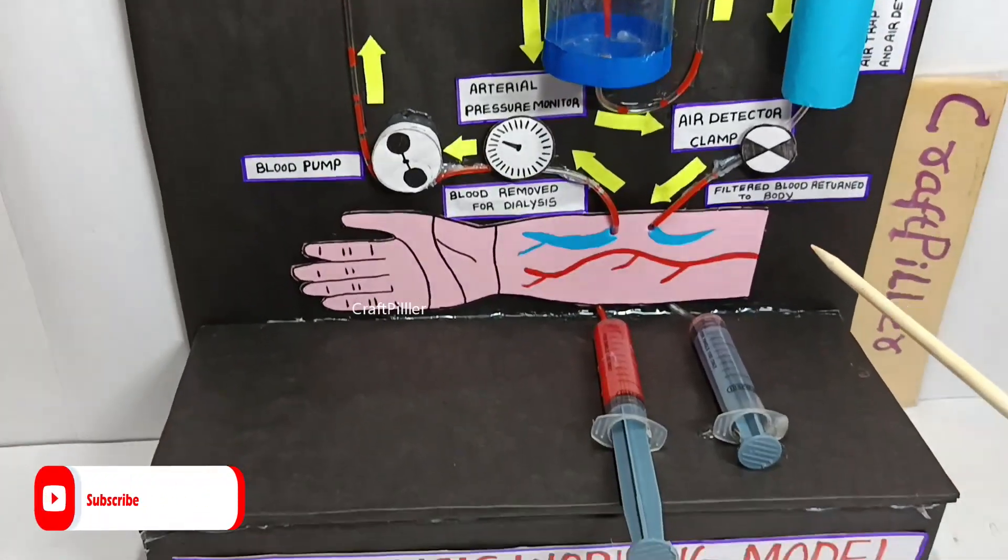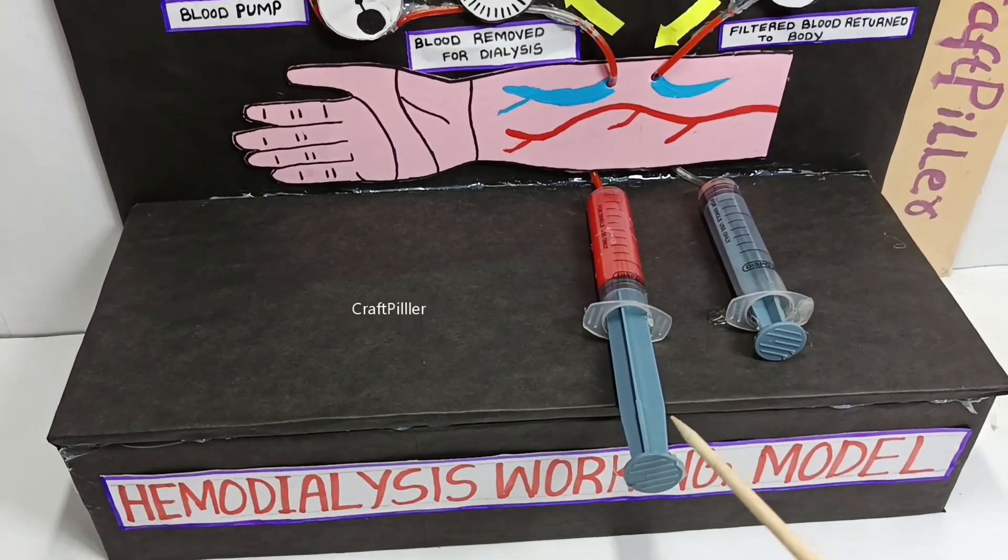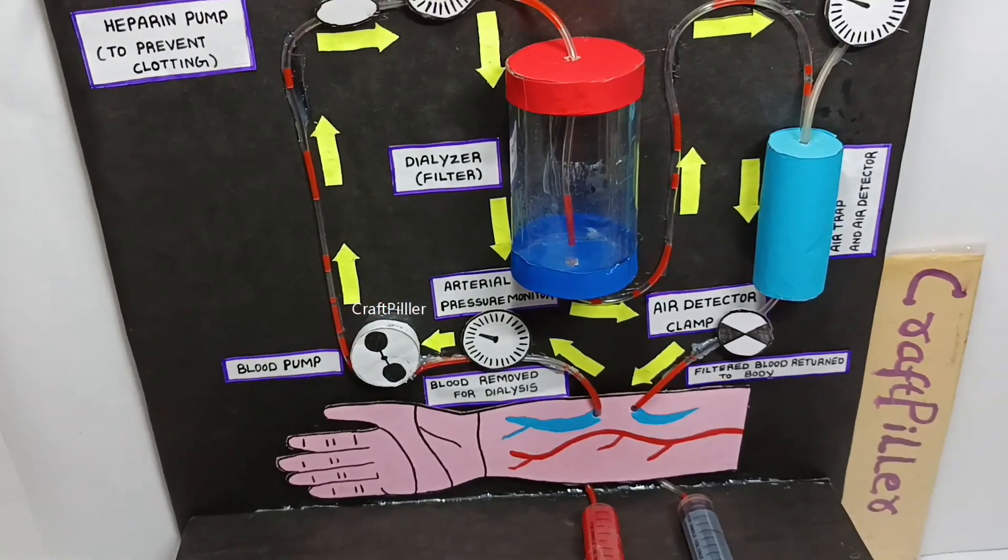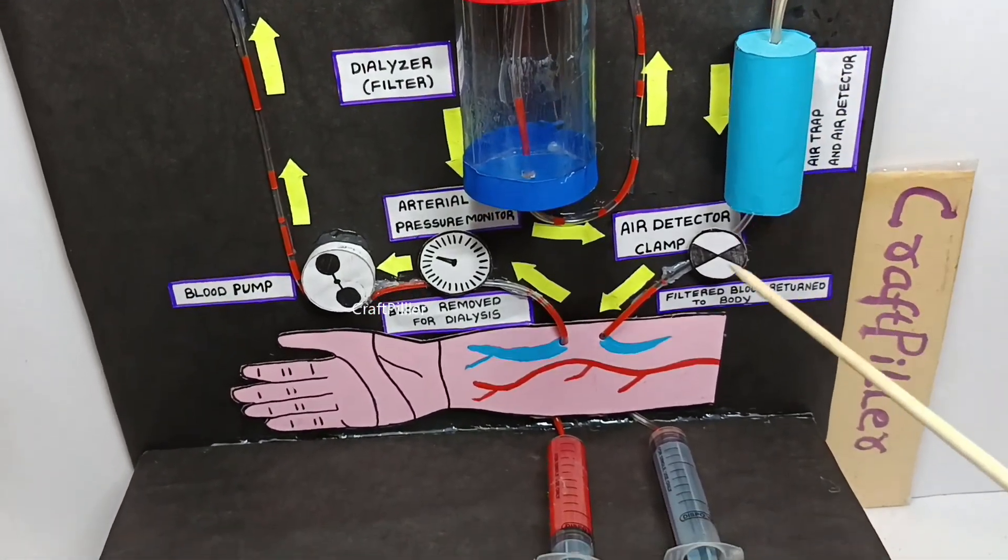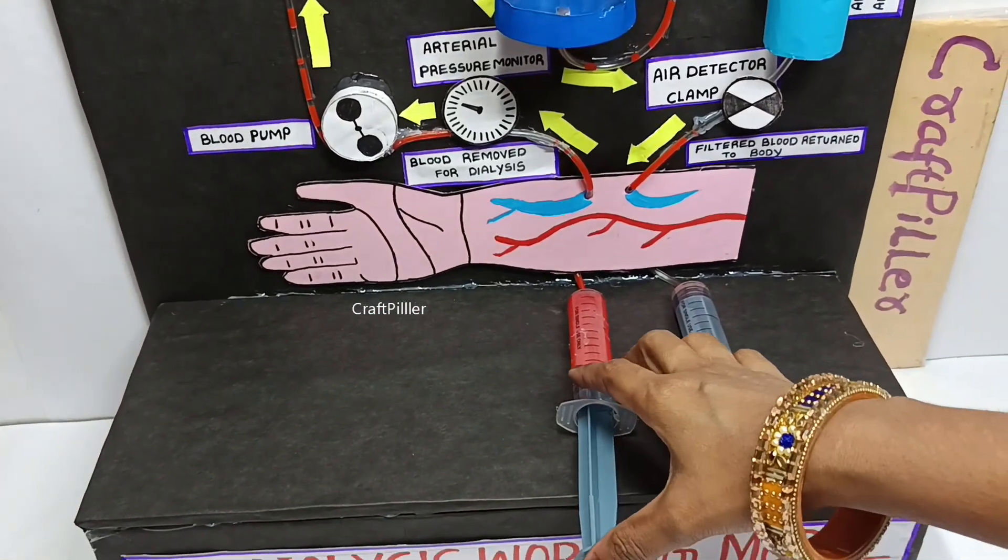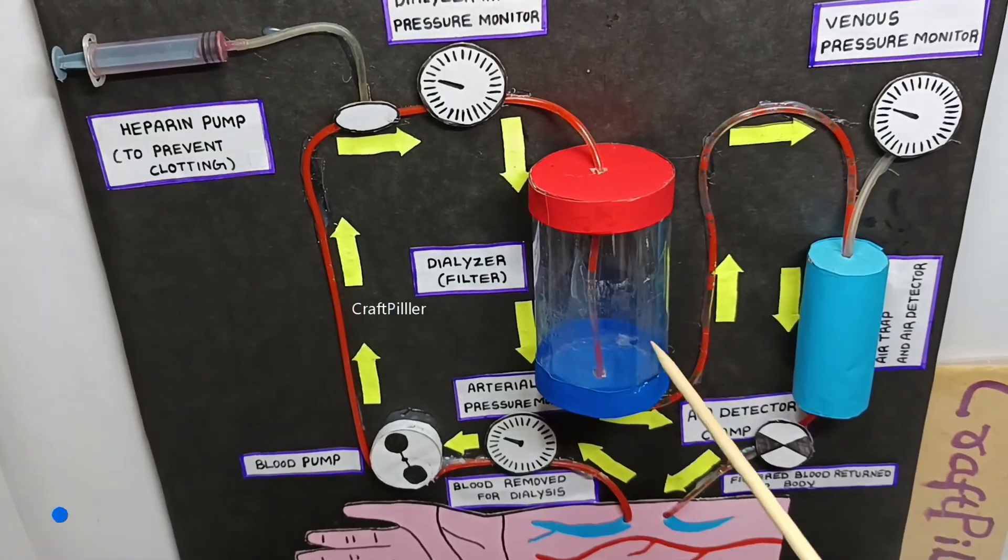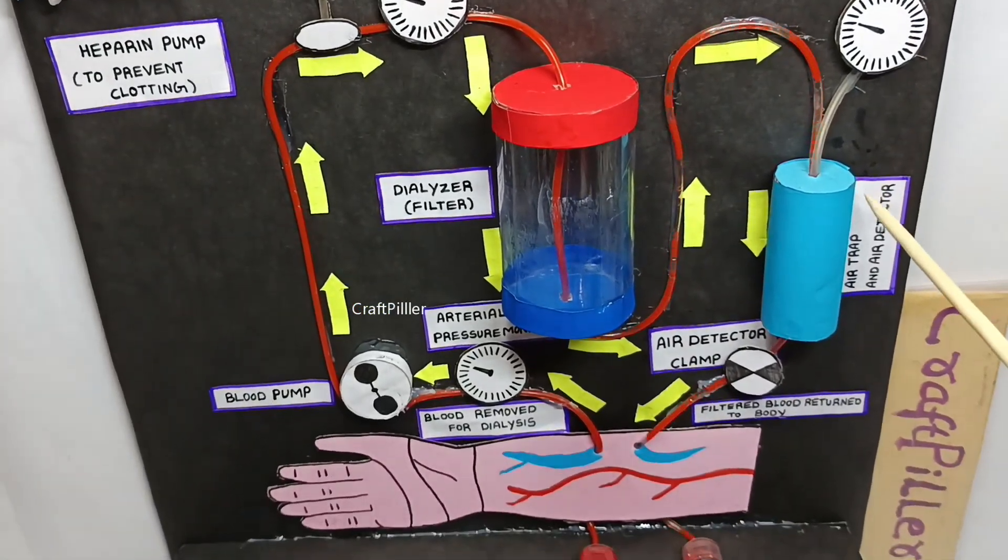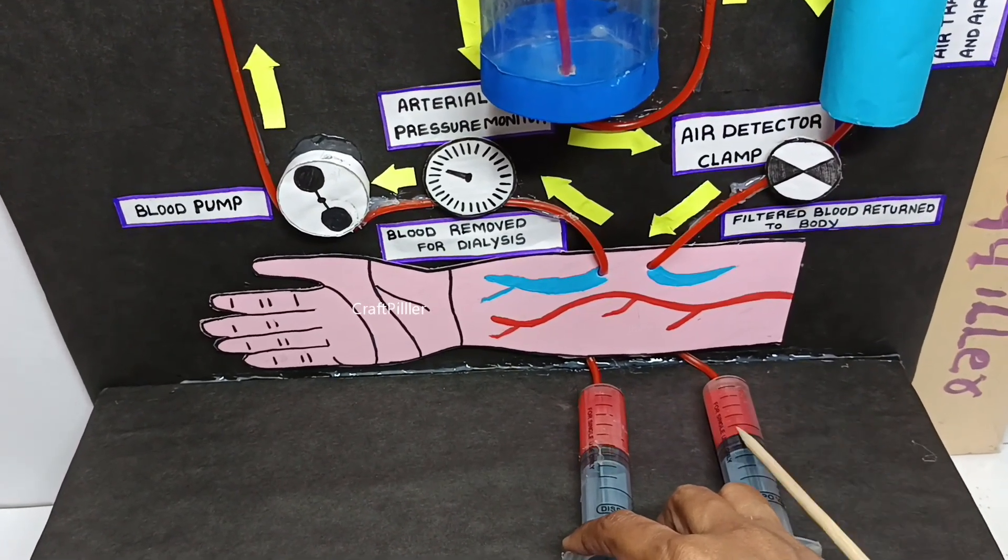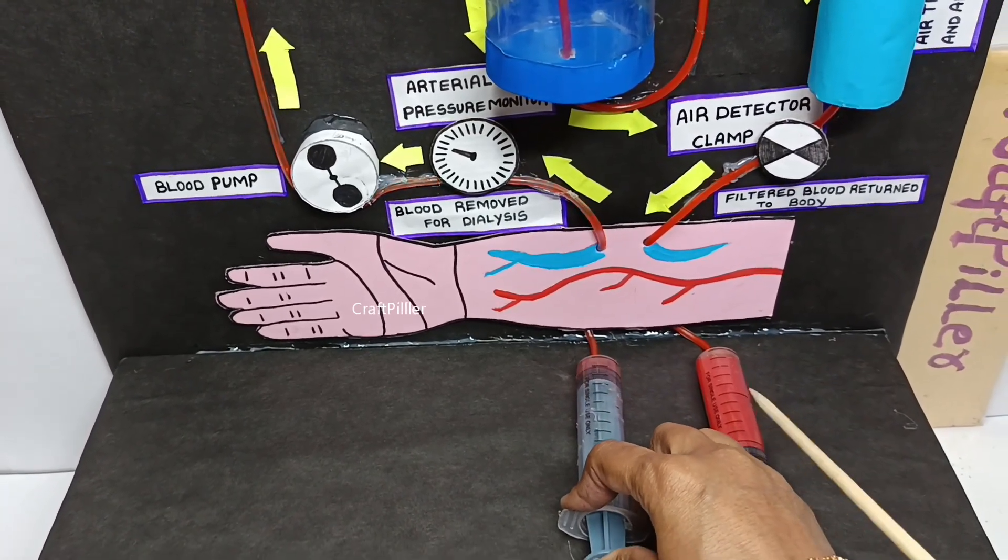This entire process we treat as a hemodialysis working model. Now we will demonstrate by making use of these two small syringes how we can pump the blood by pulling the blood from the human body to the dialyzer, and how the blood, once the purification happens, comes back to the human body with another set of syringes. Now we are pumping the blood or we are extracting the blood from the human body. The flow of the blood is happening. Once the blood is purified, then the blood is returning into this syringe, which we are depicting as a human body. This is how the blood is extracting from this syringe and the blood is coming back to the human body once the purification happens by using this.